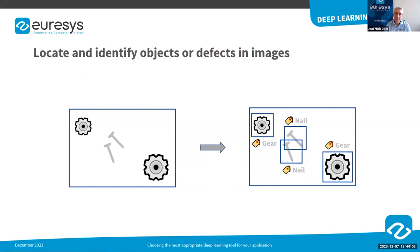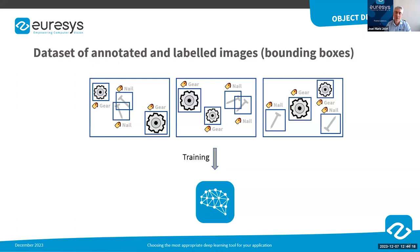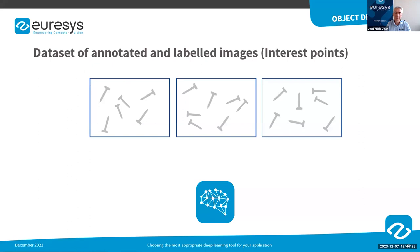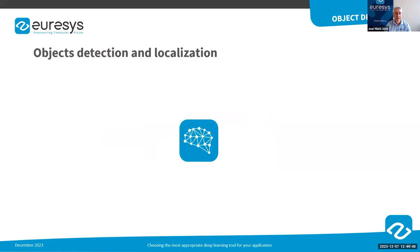The last tool I want to talk about is the object detector. Object detectors are used to locate and identify objects, products, or defects in images. The neural network of an object detector must be trained with images where the objects to be found have been annotated with bounding boxes and the corresponding labels. As an alternative, if all objects feature the same size, clicking the center of each object is sufficient to annotate the image — this is what we call the interest point mode. After training, the object detector can predict the bounding box surrounding each found object and assign a label to each bounding box.